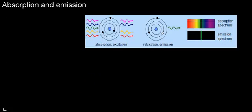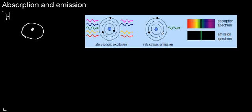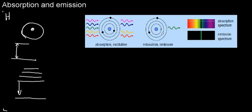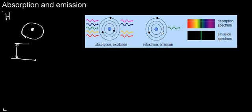Let's start with absorption and emission spectra. What's important to understand is that all matter is able to absorb electromagnetic radiation to a given extent. Let's take hydrogen — it only has one electron. I'll draw a nucleus and this one electron. It has one energy level, and we can see the most simple absorption and emission spectrum for hydrogen, which is what is covered here.